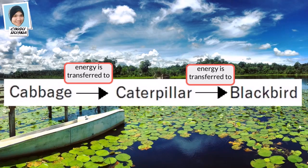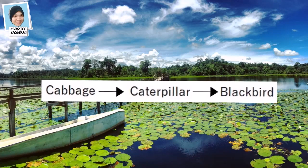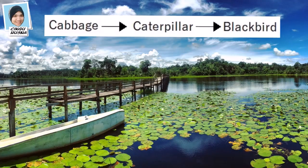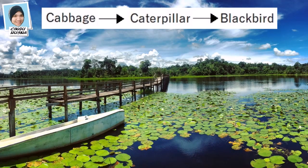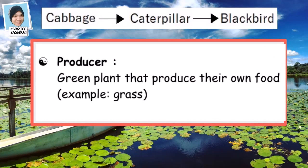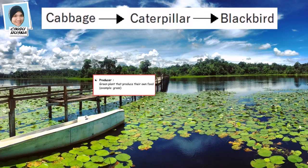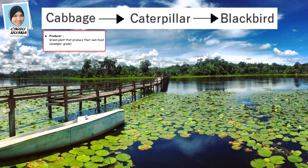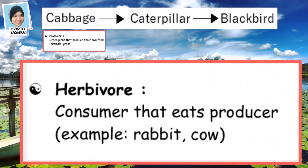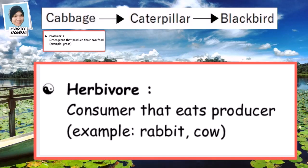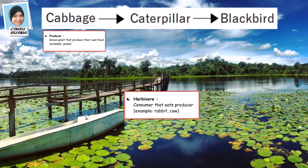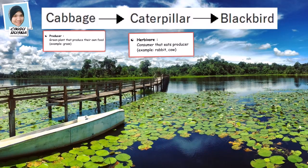To identify the role of the organisms: at the beginning of any food chain, it always starts with a plant. The plant is what we call the producer — any plant that produces its own food. Producers are eaten by herbivores. Herbivores are animals that eat plants; for example, a rabbit.